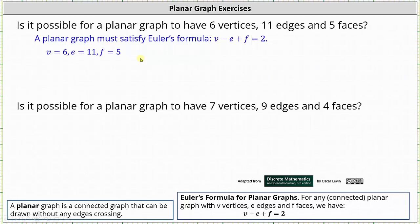For the first question, we have v equals six, e equals 11, and f equals five. Using Euler's formula, v minus e plus f is six minus 11 plus five, which is zero not equal to two.